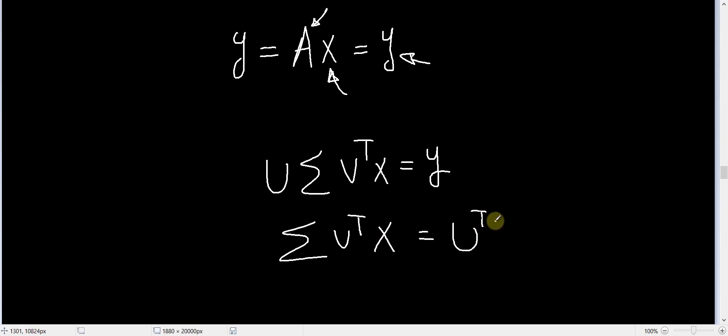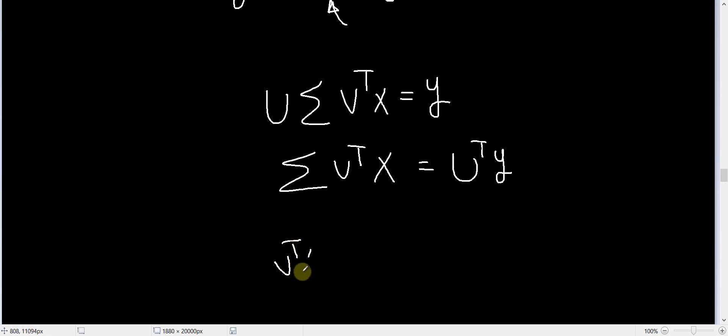This is equal to U transposed multiplied by Y. Now you can do some change of variables. Let V transposed X be equal to P and U transposed Y be equal to Z.